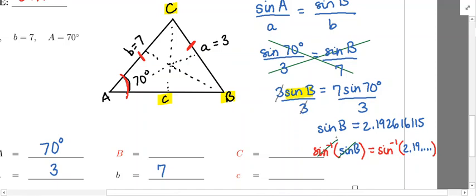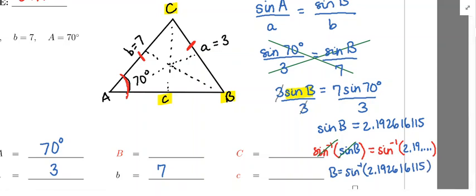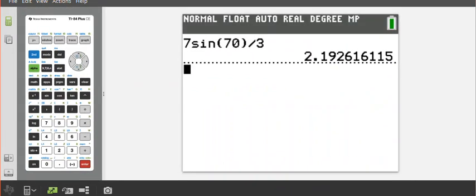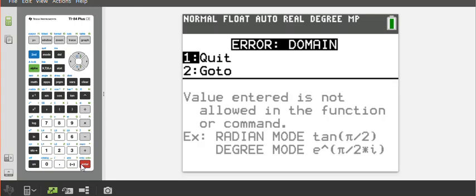We're going to go to our calculator and pop this in and see what we get for angle B. We already have this decimal expansion in here, so we just need to make sure our calculator is in degrees. We're going to do the sine inverse, either retype the decimal or just call up the previous answer. And oh my goodness, we get an error.